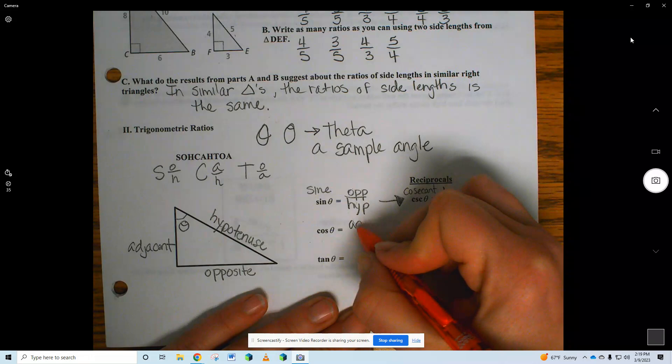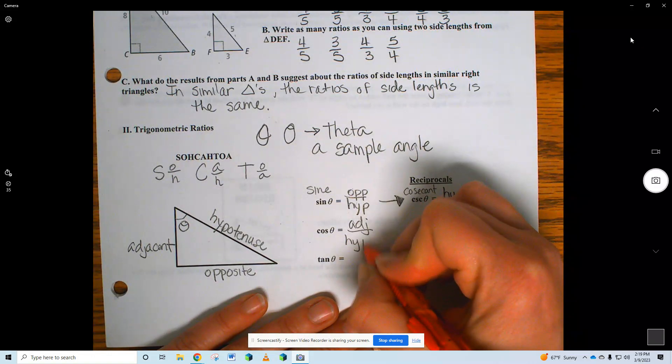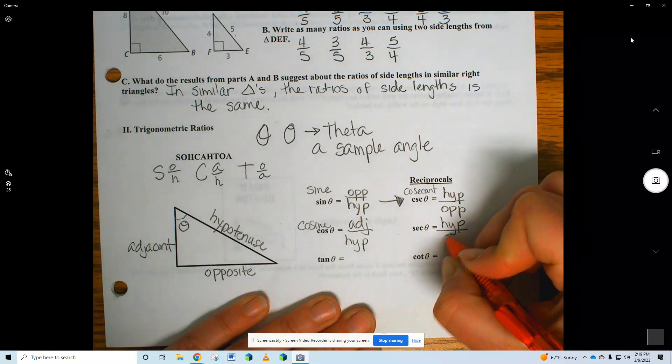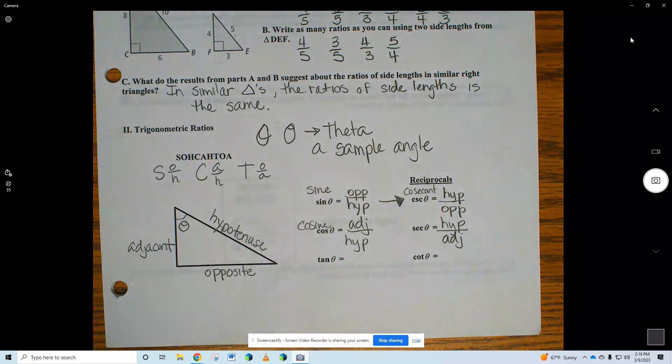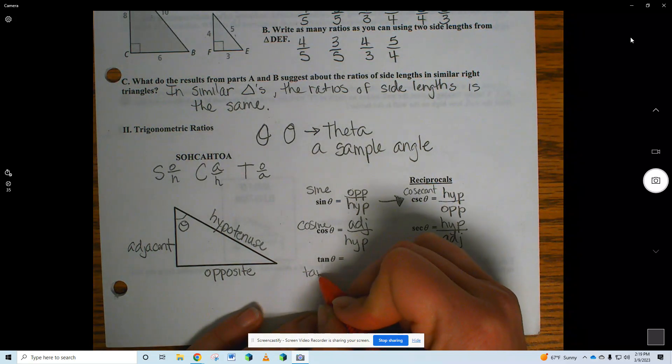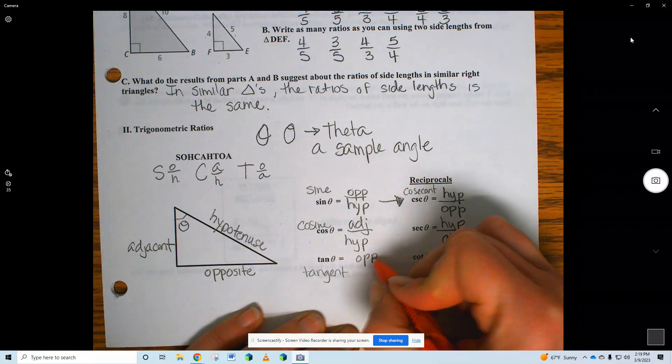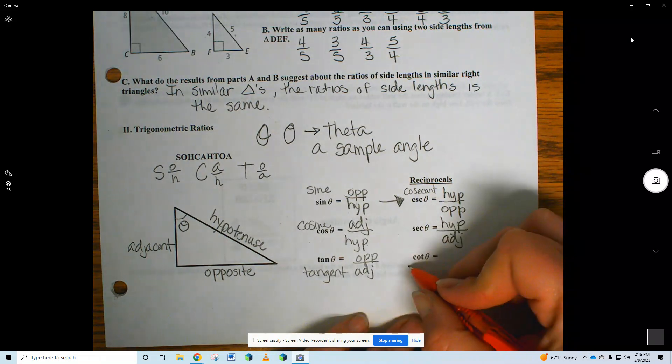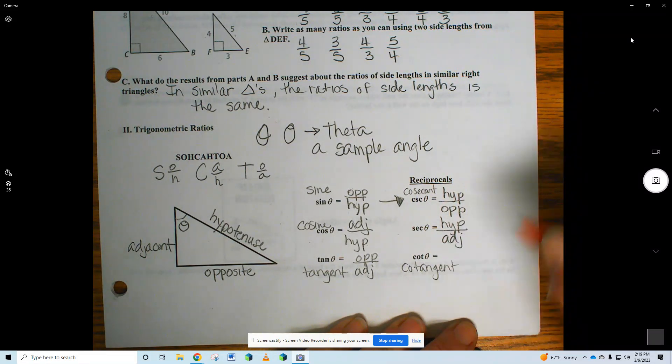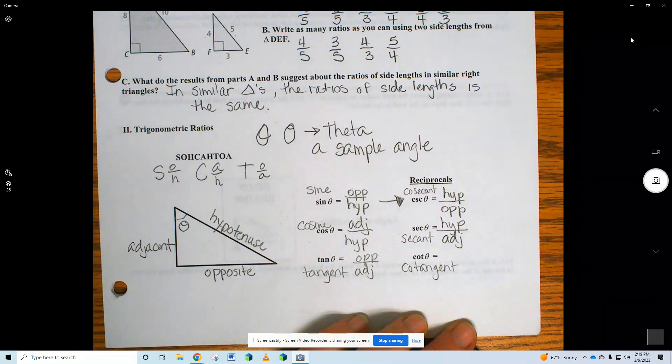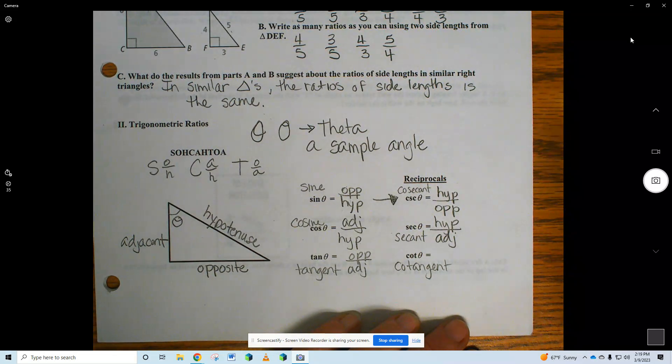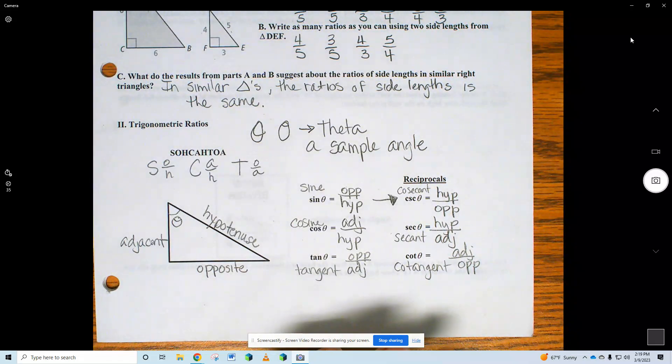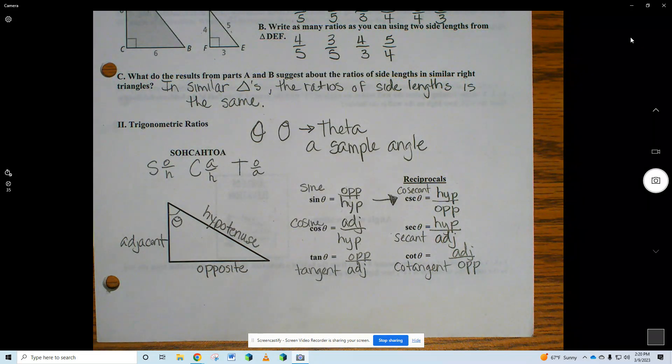Cosine is adjacent, ADJ, adjacent, ADJ, over hypotenuse. Cosine. Secant. Hypotenuse over adjacent, ADJ. Tangent is opposite, OPP, over adjacent. I also wrote in secant. Secant. Adjacent over opposite. I'm just reciprocal-ing tangent. Same thing that's on the board.